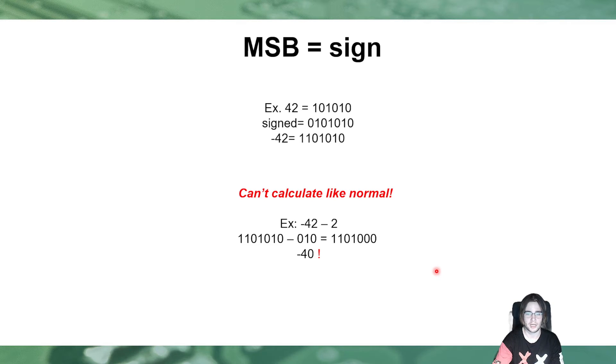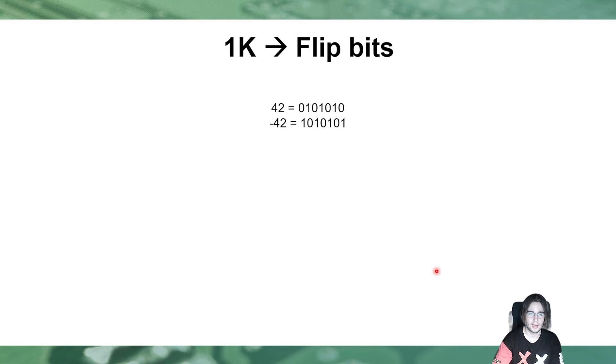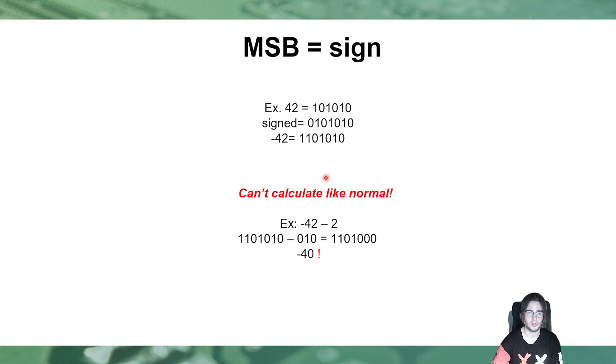Little problem, we can't calculate, like normal with that. If we would, for example, calculate minus 42, minus 2, we would get minus 40, which is wrong, we need to get minus 44. So, another variant, that was tried, is the 1K variant, where we just simply, to make the numbers negative, we flip the bits. It is still the same, the most significant bits shows our sign, 0 is still positive, 1 is negative, so if we have a positive number, we always need to have a 0 in front of it. And, in this case, we still can't calculate like normal.